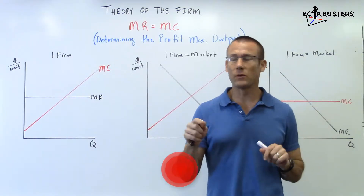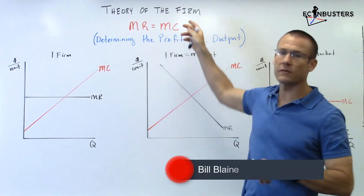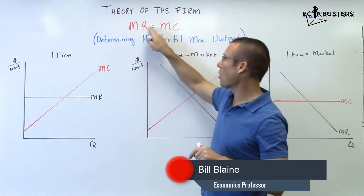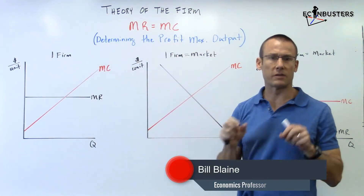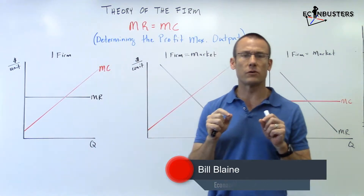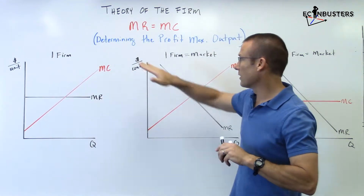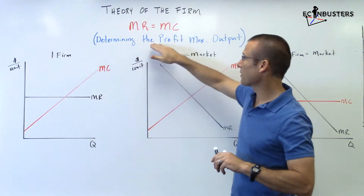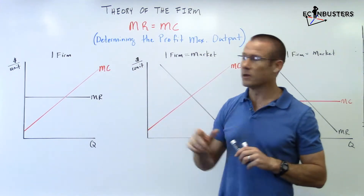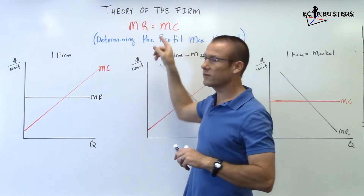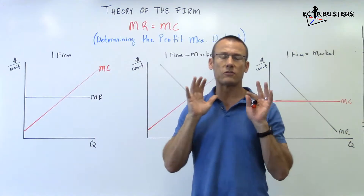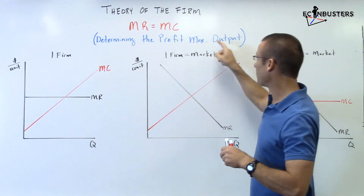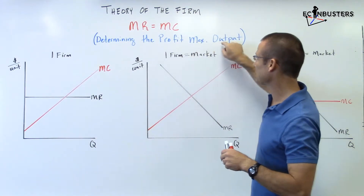Hey everybody, welcome back. We are on Theory of the Firm and we're focused on this equality: MR equals MC, marginal revenue equals marginal cost. Now look at the subtitle: Determining the Profit Maximizing Level of Output. This equality is so important for determining the profit maximizing level of output.